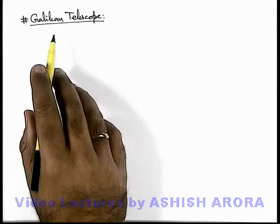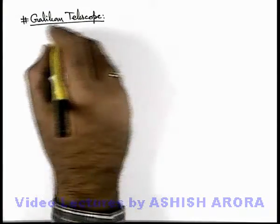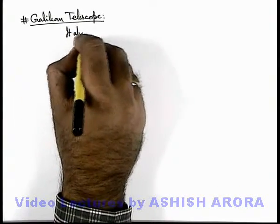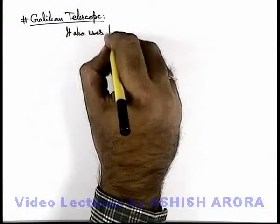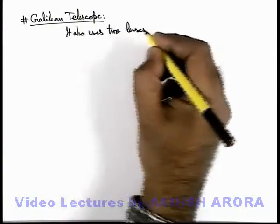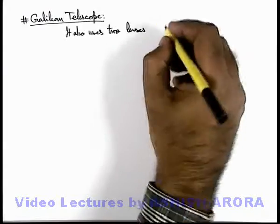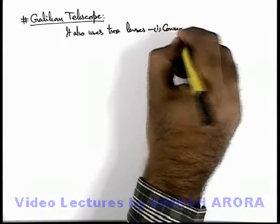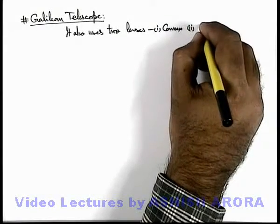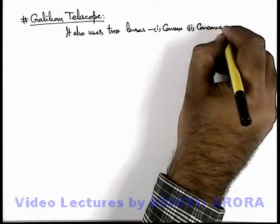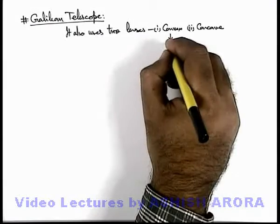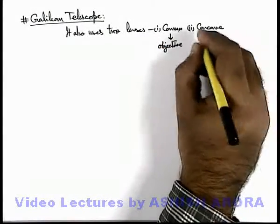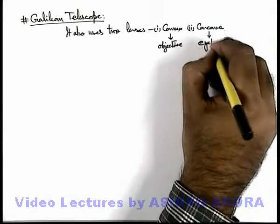Let us now study about a Galilean telescope. About the Galilean telescope, we can write that it also uses 2 lenses, like a refracting telescope. But the difference is that here one lens is a convex or converging lens and the other lens is a concave lens. The convex lens is used as an objective lens which is closer to the object side, and the concave lens is the eyepiece lens.